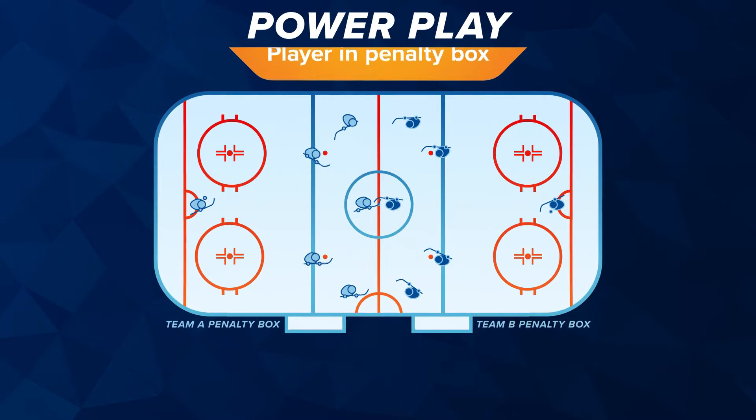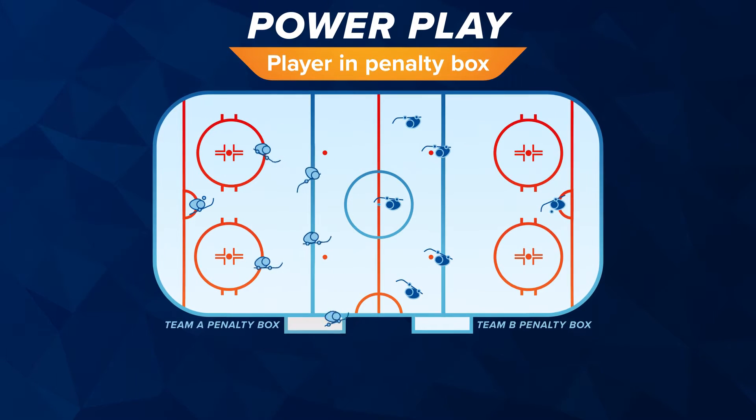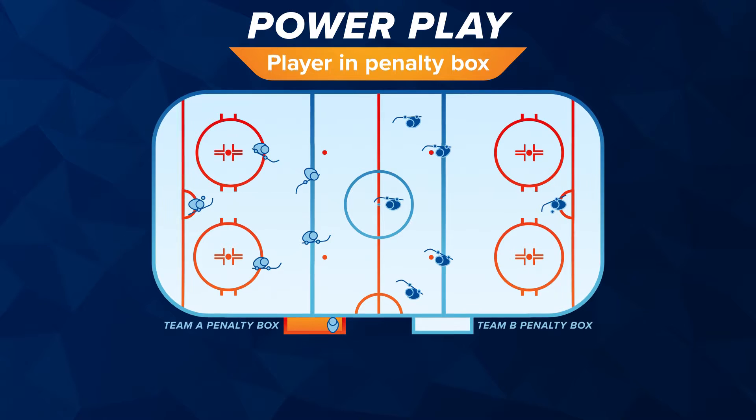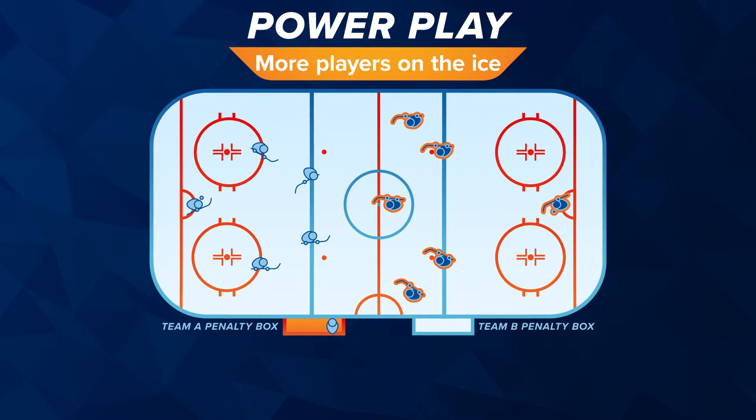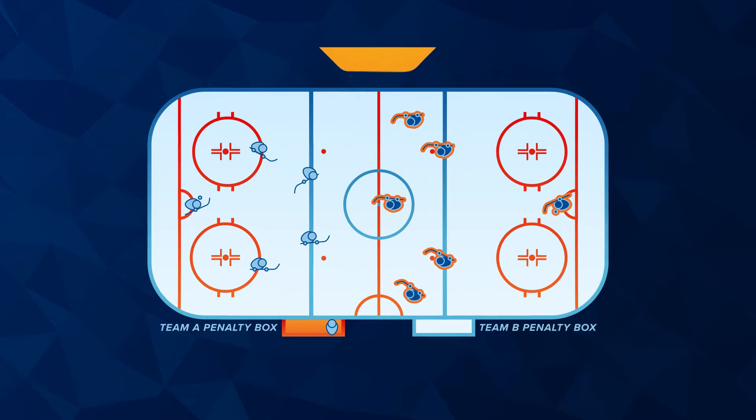Power play: if team A has a player in the penalty box, then team B has more players on the ice — team B has a power play.